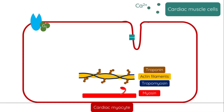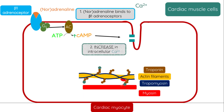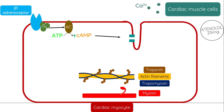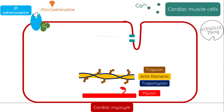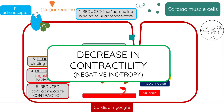In the heart's muscle cells, also known as cardiac myocytes, beta-1 receptor activation leads to an increase in intracellular calcium levels, which increases the heart's contractility. So in fight-or-flight mode, the heart beats harder to increase cardiac output. But beta-blocking drugs, such as atenolol — which is very cardio-selective — prevent the binding of noradrenaline or adrenaline to the beta-1 receptor, leading to a decrease in intracellular calcium concentrations. This reduces the contractility of the cardiac muscle cells, leading to reduced heart contractility, also known as negative inotropy.